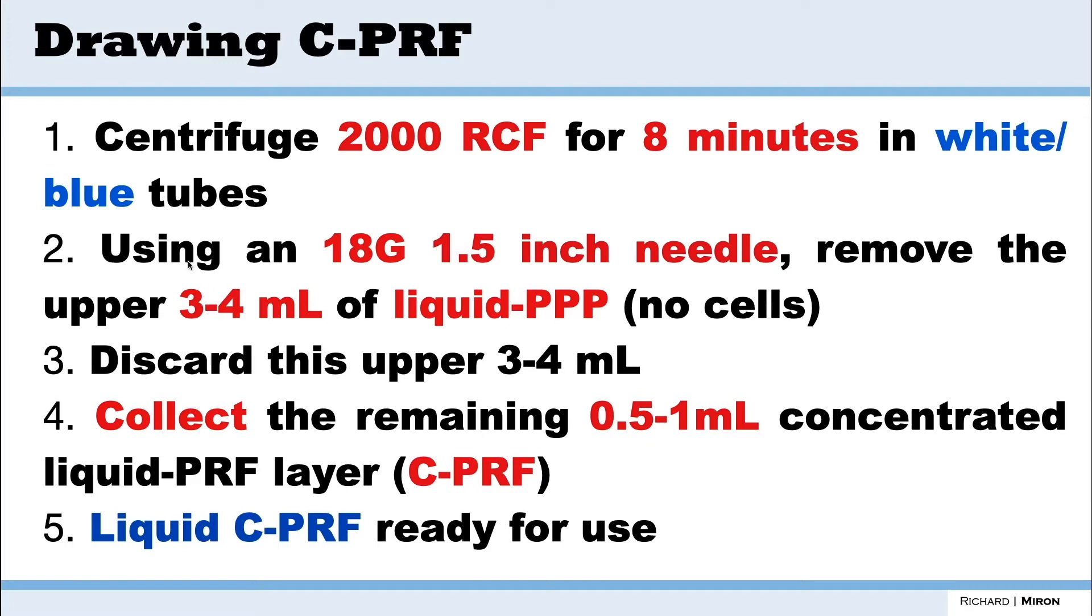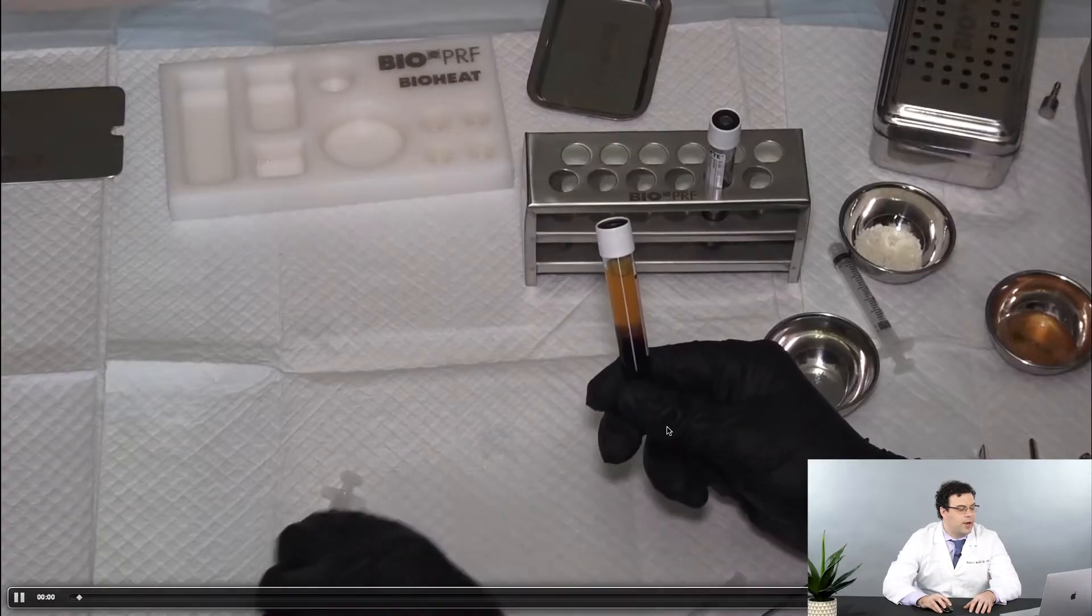What we're going to do instead is we're going to take that 18 gauge needle, remove the upper three to four mLs of liquid PPP. We're going to discard this upper layer and then we're going to collect the remaining 0.5 to 1 mL layer, and from there it's then going to be ready.